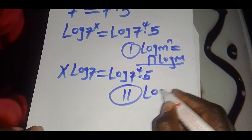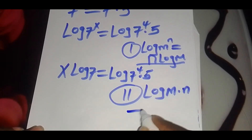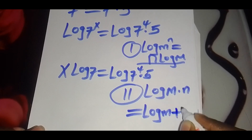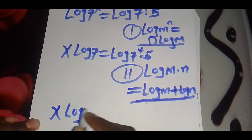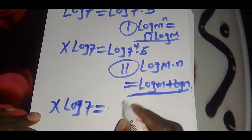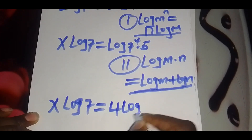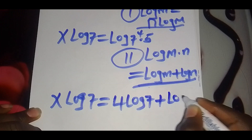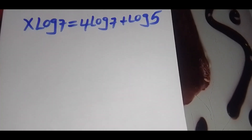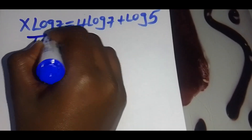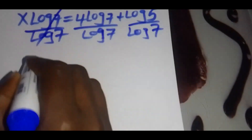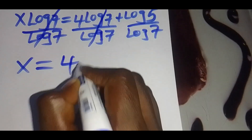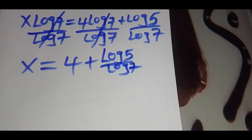Now we apply the product rule: log of m times n equals log m plus log n. So x log 7 equals 4 log 7 plus log 5. Dividing both sides by log 7, we get x equals 4 plus log 5 divided by log 7.